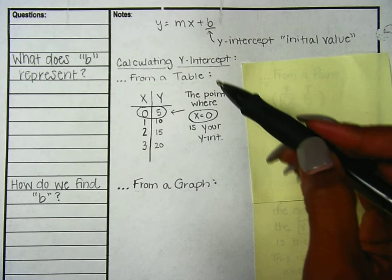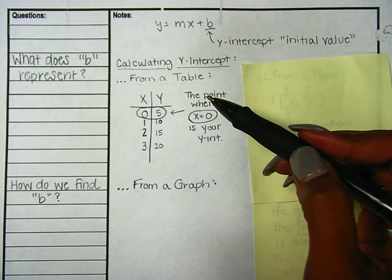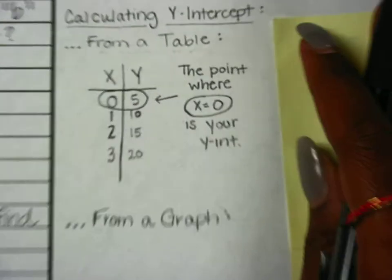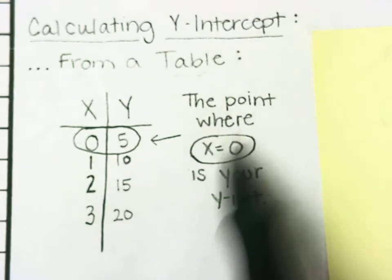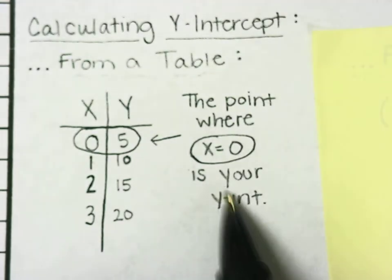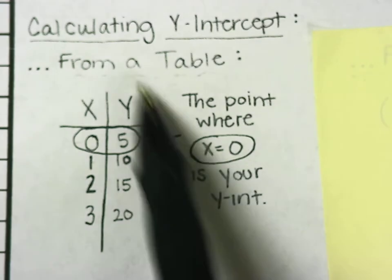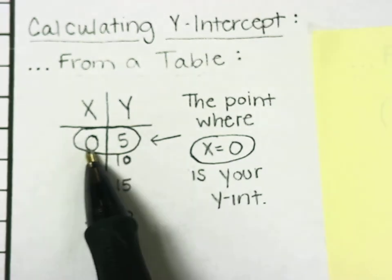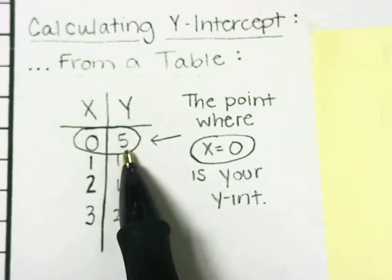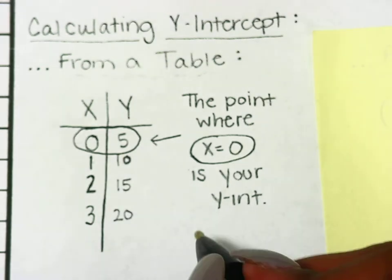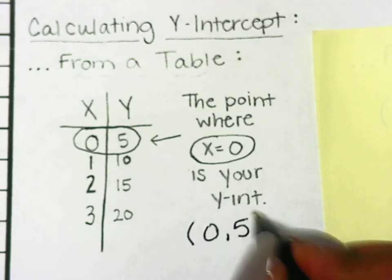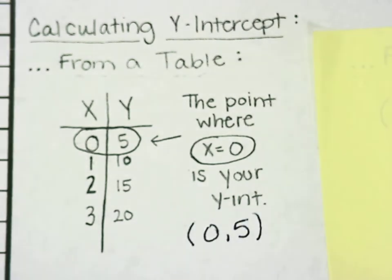When we're looking at a table, it's pretty simple to figure out what the y-intercept is. All you're doing is finding the point where x is equal to zero. This is your y-intercept. So looking at a table, you're simply looking to see when x is zero, what the y-value is. In this problem, our y-intercept is at (0, 5).